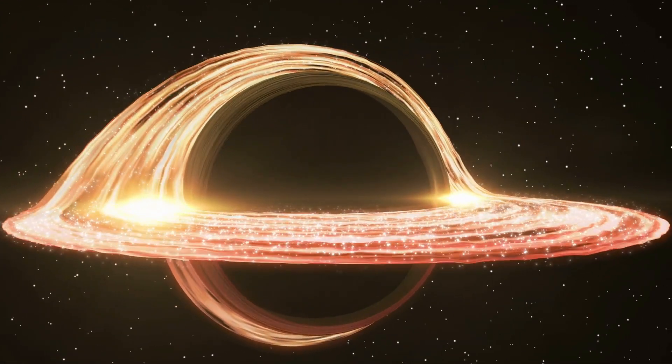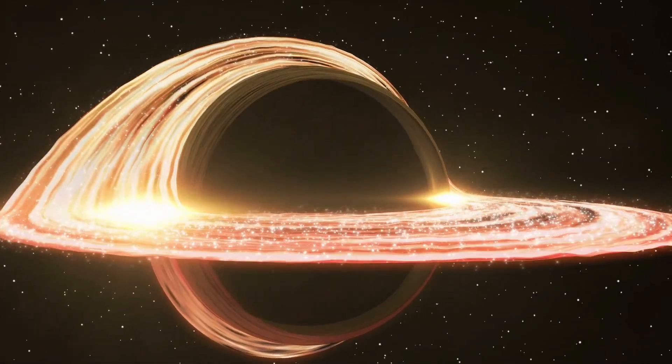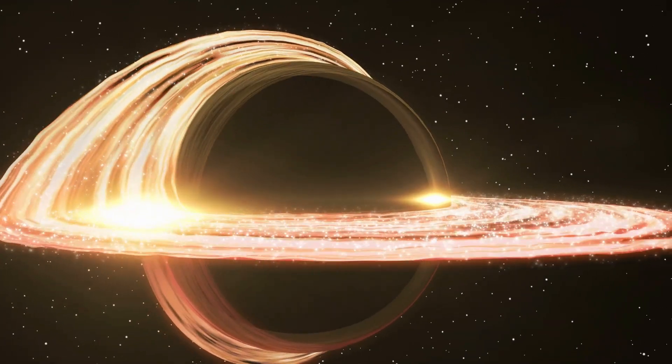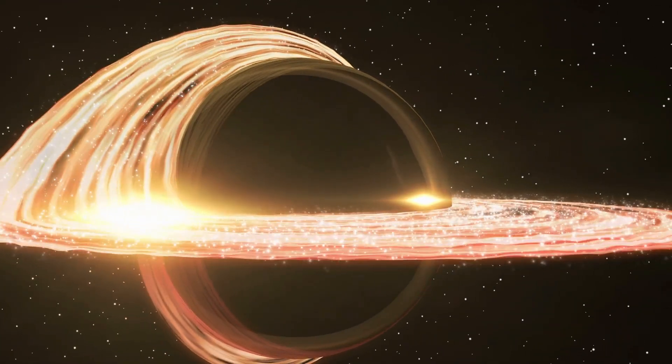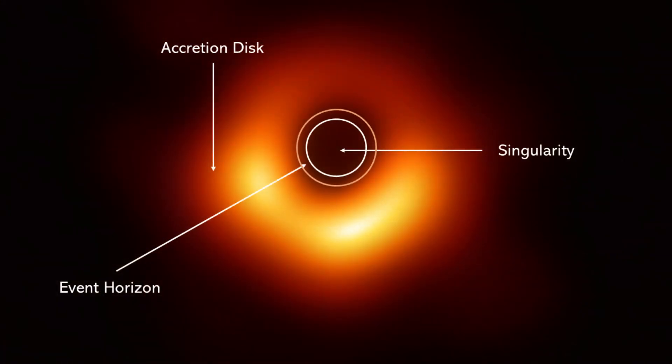The matter in the accretion disk follows Keplerian orbits, which means that the inner regions of the disk rotate at higher speeds than the outer regions. This rotation imparts angular momentum to the matter, causing it to maintain a relatively stable, flat configuration. The conservation of angular momentum is a fundamental principle in the formation and stability of accretion disks.